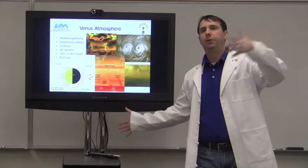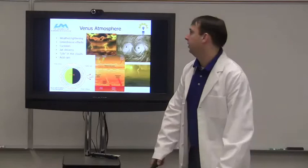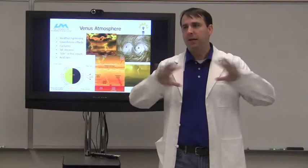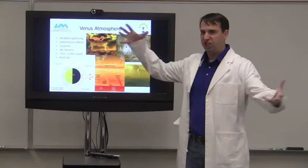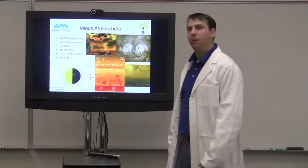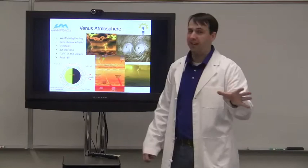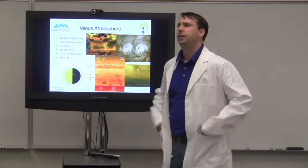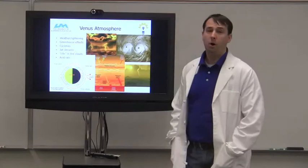Here are some interesting things to look at. The atmosphere has weather — Venus's atmosphere has weather and lightning and storms. Venus's storms make our storms look like nothing. Venus has a really thick atmosphere and really thick clouds. The greenhouse effect: because of the thick atmosphere you can't actually see the surface of Venus from orbit, and the heat stays trapped inside. That's something you can look at — you could look at some of the parts of the greenhouse effect.